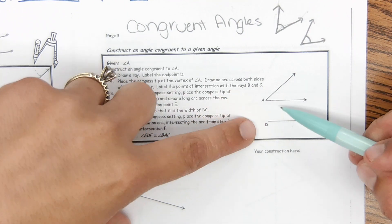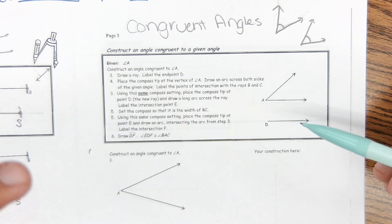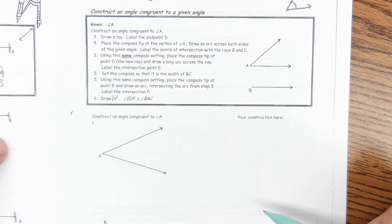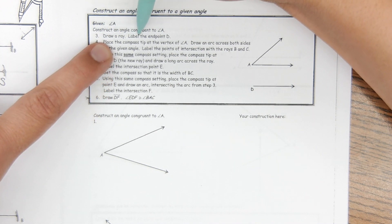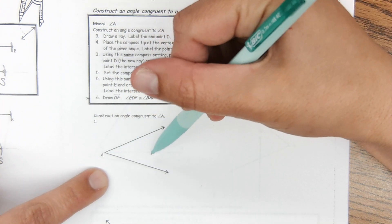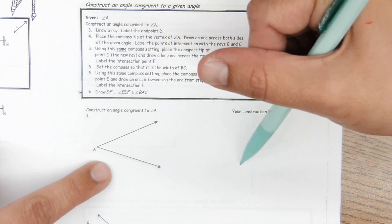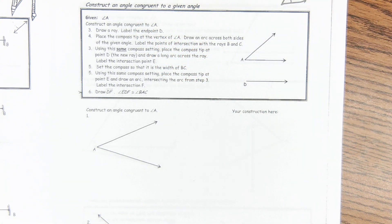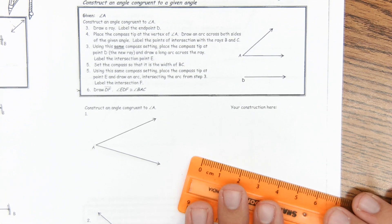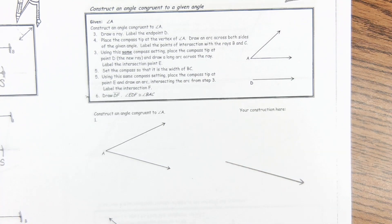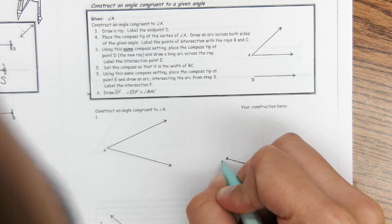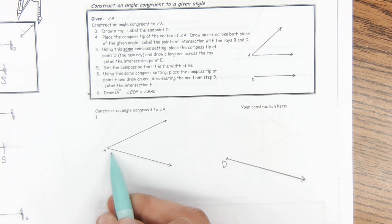So in this example here there's not quite enough room to make congruent angles, so we're just going to jump to number one. I'm still following these directions though. It says draw a ray and label the endpoint D. So we have the angle right here, we're going to make a congruent one right over here. Starting with, we're going to just draw a ray and label the endpoint D. So this ray would match with this.